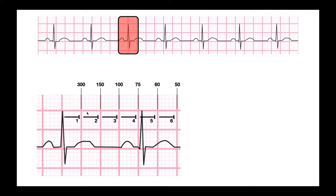I go a second big box over it gets 150. A third big box over it gets 100. A fourth big box over 75. A fifth big box over 60. A sixth big box over 50. Some people memorize those numbers 300, 150, 100, 75, 60, 50. But if you forget those numbers they basically come from this formula 300 over x.